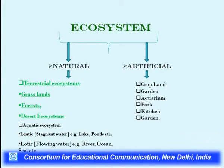Then there are artificial, anthropogenic, man-made ecosystems. We have developed agricultural land, so-called cropland, farms, farmland, gardens, aquariums, parks, kitchen gardens, and many more, which have been developed with a congenial relationship with nature. No doubt it is initiated and developed by mankind, but without a congenial relationship with nature, it cannot be established.